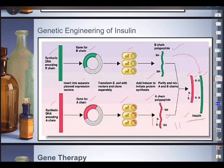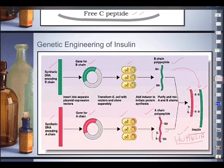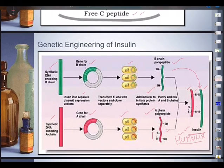This insulin was tested and found to be very effective. Since it helps human beings avoid diabetes, it is appropriately called Humulin — H-U-M-U-L-I-N. This is one of the greatest contributions of biotechnology, producing human insulin or Humulin. We will be talking about diseases that can be cured through gene therapy in our next class.